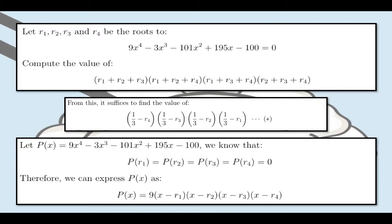Notice how the solution will try to get the expression star by letting the left-hand side of the equation be a polynomial. So let P of x equals 9x to the fourth minus 3x cubed minus 101x squared plus 195x minus 100.